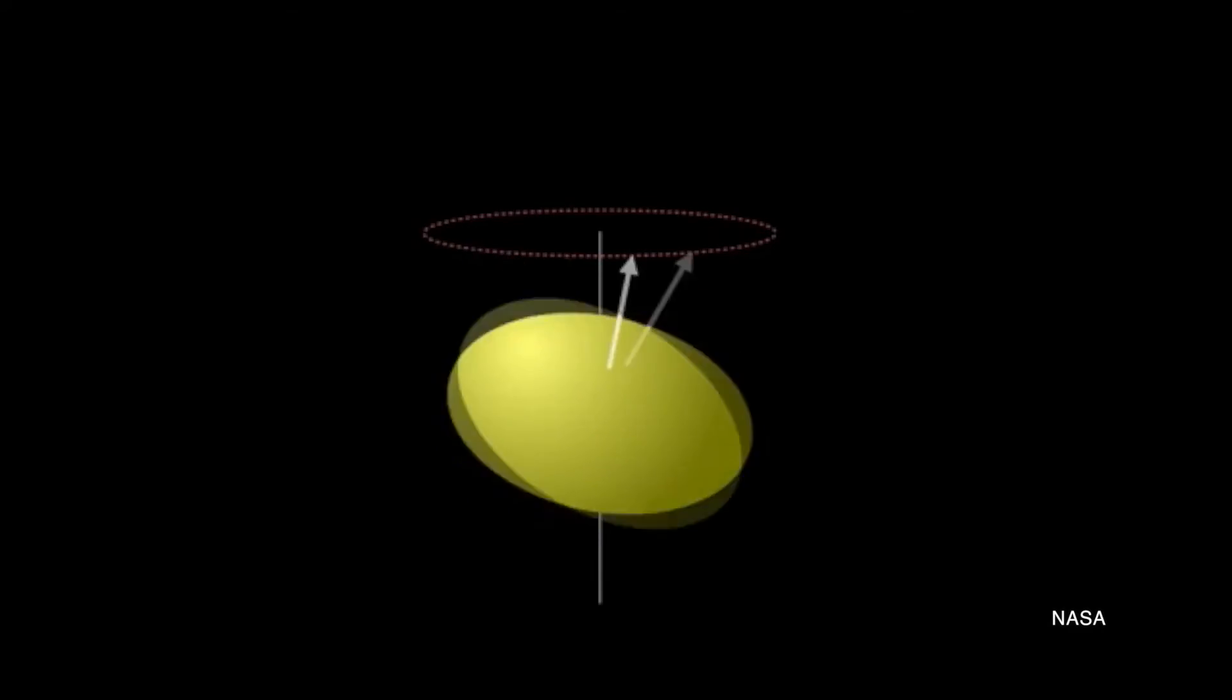But that's not all. These small moons also wobble far more than scientists expect small moons to wobble. They behave like spinning tops more than anything else.